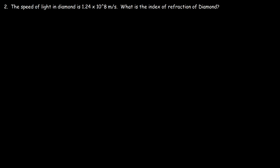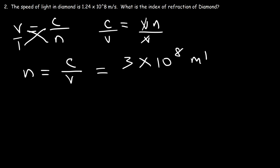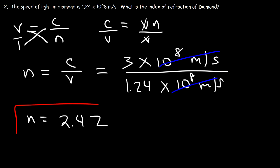Number 2: the speed of light in diamond is 1.24 times 10 to the 8 meters per second. What is the index of refraction of diamond? Let's use the same formula. V is equal to C over N. Let's isolate N by cross-multiplying, then dividing both sides by V. So the index of refraction is equal to the speed of light in a vacuum divided by the speed of light in a material. The speed of light in a vacuum is 3 times 10 to the 8, and in diamond it's 1.24 times 10 to the 8, so it's just 3 divided by 1.24. The index of refraction of diamond is about 2.42.